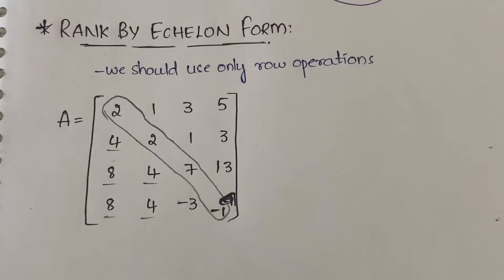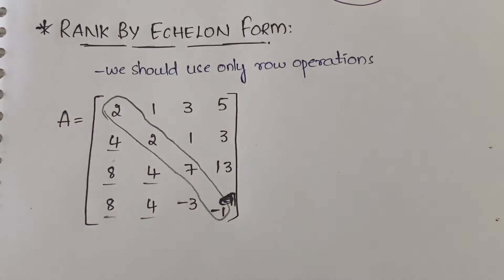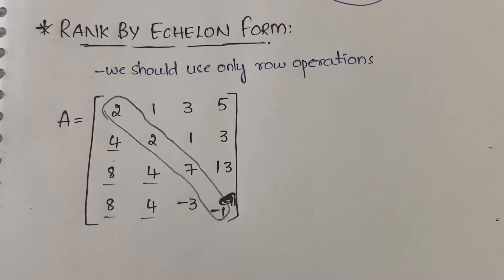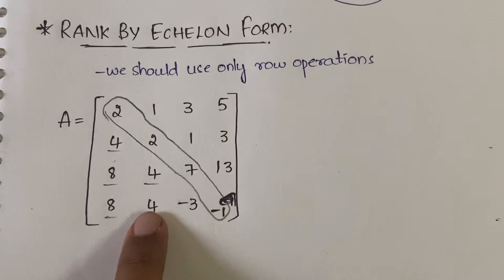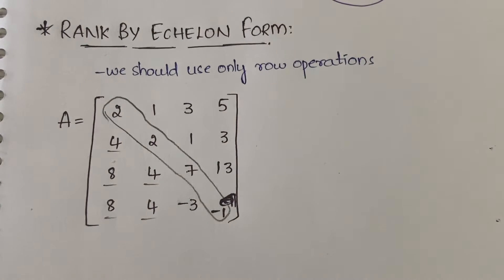This echelon form is not only for square matrices, you can also apply it to rectangular matrices. By using echelon form, you will also be calculating unknown values — we have different problems in echelon form. In this video, I will explain how to calculate rank for a 4 by 4 matrix. In the next video, I will explain how to calculate rank for a 4 by 5 or 5 by 4 matrix and then unknown values.